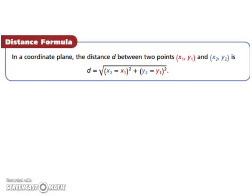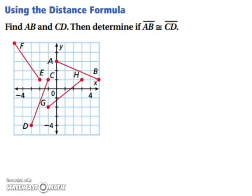Let's try an example. Find AB and CD, then determine if the two of them are congruent. Let's start with the distance of AB. Keep in mind our distance formula is the square root of (x2 - x1)² plus the quantity (y2 - y1)², and all of that is under the square root.